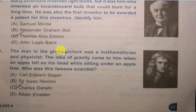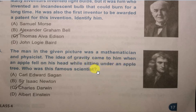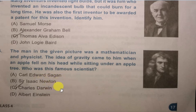Question No. 3: The man in the given picture was a mathematician and physicist. The idea of gravity came to him when an apple fell on his head while sitting under an apple tree. Who was this famous scientist? Options: Carl Edward Sagan, Sir Isaac Newton, Charles Darwin, Albert Einstein. The correct answer is Sir Isaac Newton.